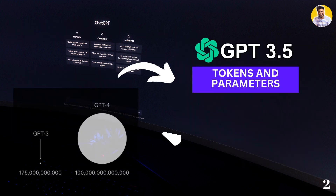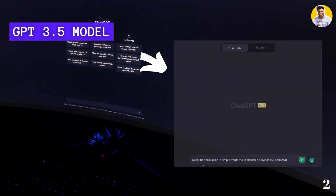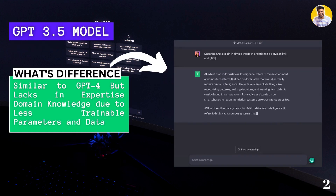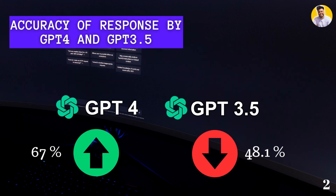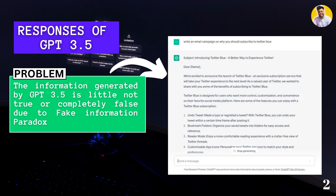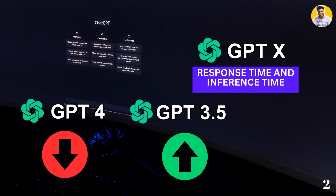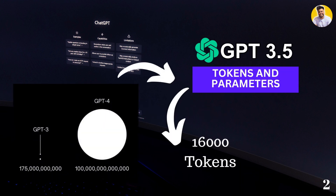GPT-3.5 is trained on only 175 billion parameters, whereas GPT-4 is trained on more than 1 trillion parameters. That's why the accuracy of GPT-3.5 is scored around 48.1%, whereas GPT-4 scored 67%. So you can get more inaccurate information from GPT-3.5 than GPT-4. However, the response time of GPT-3.5 is much faster than GPT-4, and it can accept up to 16,000 tokens of context length.